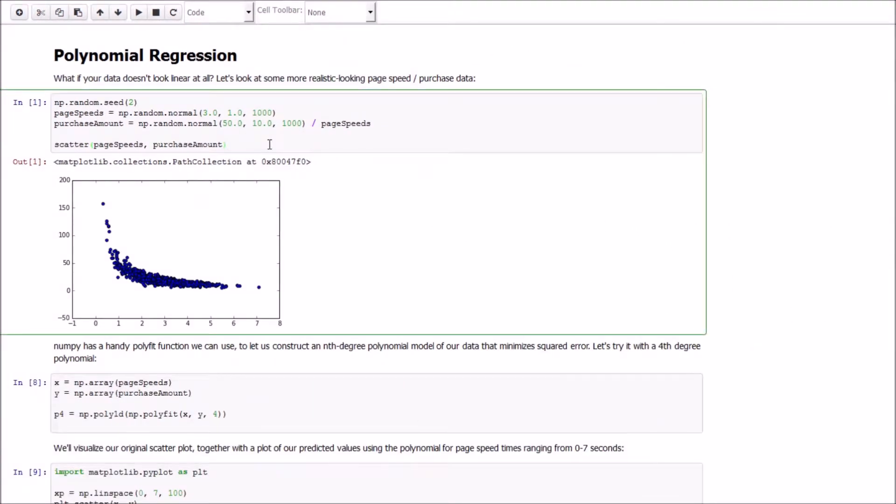So let's create a new relationship between our page speeds and purchase amount fake data, and this time we're going to create a more complex relationship that's not linear. We're going to take the page speeds and make it some function of the division of page speeds for the purchase amount. And if we do a scatter plot, we end up with this.